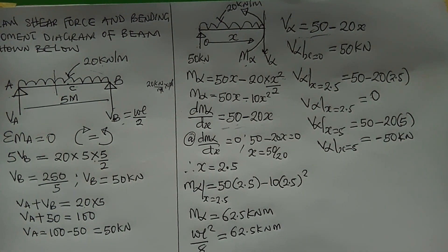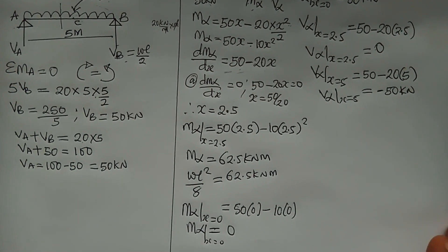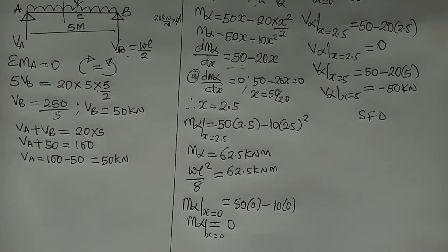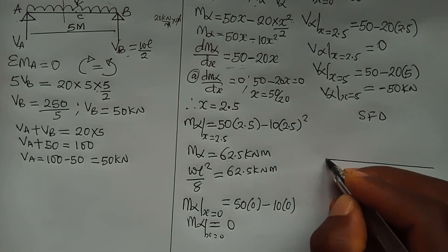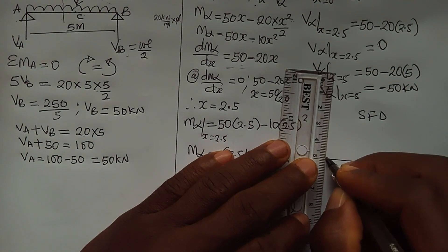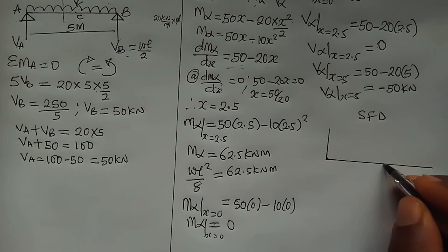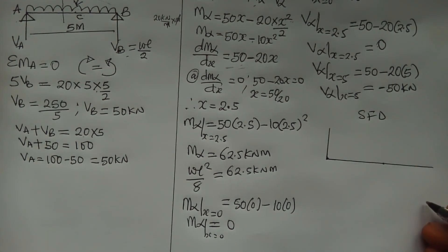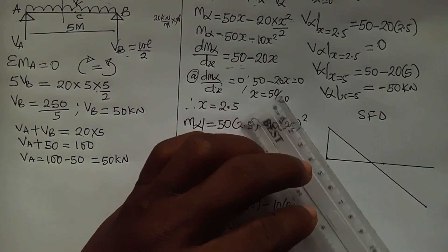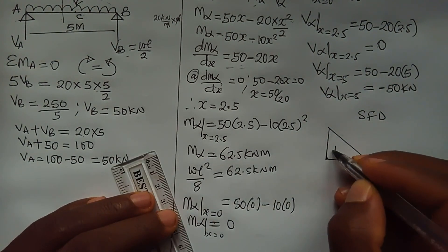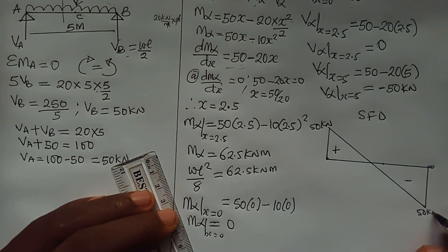Let's now draw the shear force diagram. We draw the horizontal baseline. At point A, the shear goes up to +50 kN. At the center, x equals 2.5, the shear is zero. At x equals 5 the shear reaches minus 50 kN. Joining these points gives a straight line, and the support reaction at B returns it to zero. The positive region is +50 kN and the negative region is minus 50 kN.